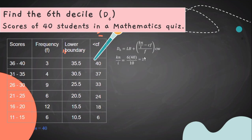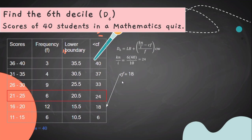The value 24 has an exact match in the cumulative frequency table. The CF (cumulative frequency of the preceding class) is 18. The lower boundary is 20.5, the frequency is 6, and the class width is 5.